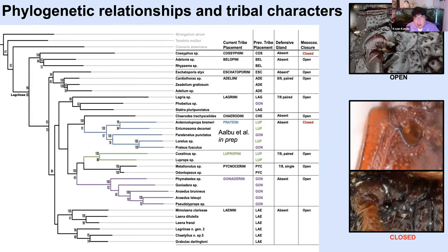Another character I'm going to touch on to help distinguish tribes — extremely relevant for distinguishing some North American taxa — is the closure of the mesocoxal cavity, a character also seen frequently in other beetle groups. When the mesocoxal cavity is open, you can clearly see the trochanter; the mesoventrite and metaventrite don't touch, and the mesepimeron separates the two. In the closed state — which is really important for distinguishing the tribe Pratiani, which we're going to be proposing soon — the trochanter isn't very visible and the ventrites touch.